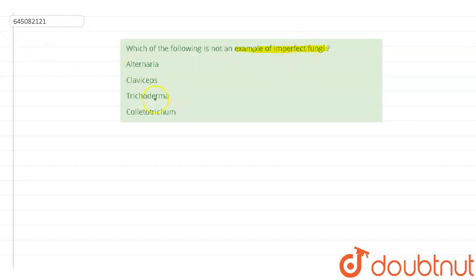Now if you talk about what is this imperfect fungi, they come in the phylum of Deuteromycetes or you can also call it as Deuteromycota. They are fungi but they do not possess the sexual structures that are used to classify the other fungi. So they lack the sexual structures which are present in the other fungi.